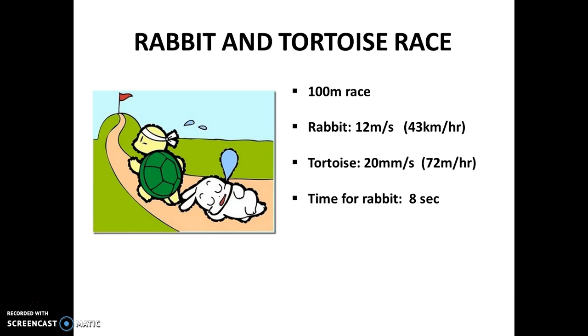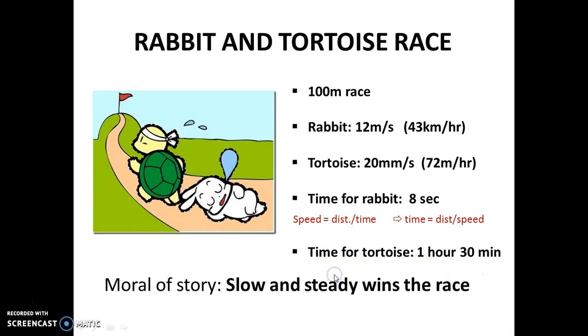The time taken by the rabbit to cover this 100 meter race track is only about 8 seconds. How do we get it? The formula for speed is speed equals distance upon time. So time equals distance upon speed which equals 100 meters divided by 12 which comes out to be about 8 seconds. Similarly, the time taken by the tortoise to cover this 100 meters track is about 1 hour 30 minutes. Thus, we can all expect the rabbit to outcome the tortoise by about 1 and a half hour.